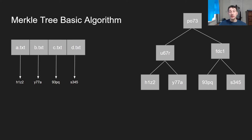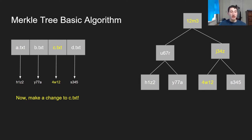We do the same thing all the way up to the root. Now imagine I wanted to make a change to one of the files — I'm going to change C.txt. You can see that the hash of C.txt has changed, thus changing that leaf node, thus changing the parent node, and ultimately changing the root.